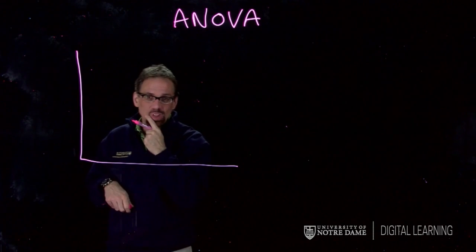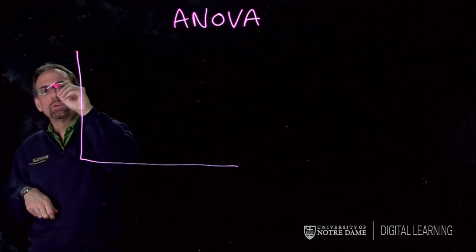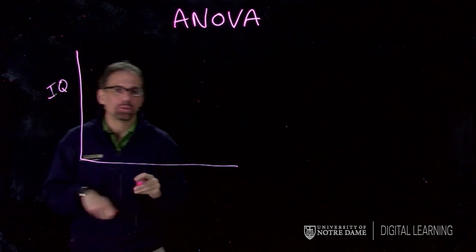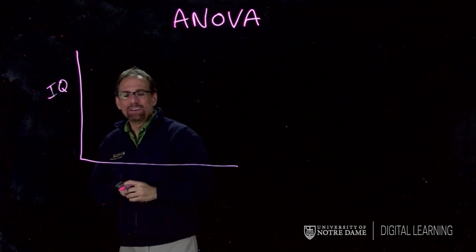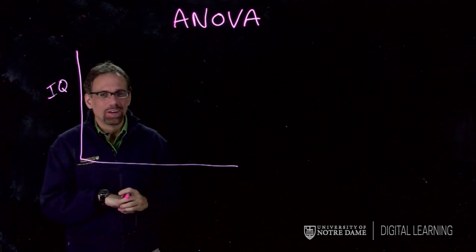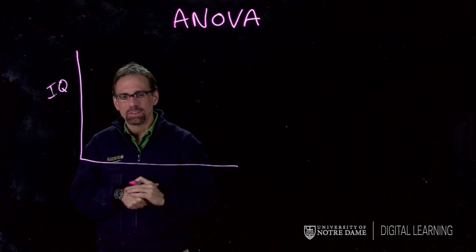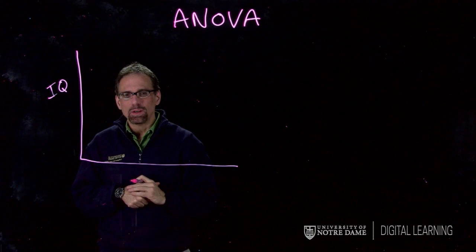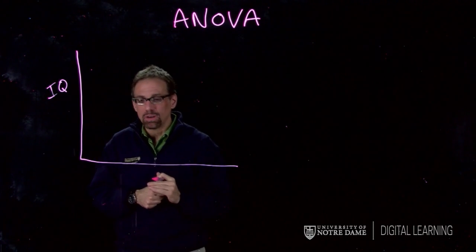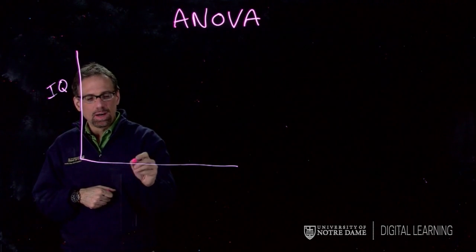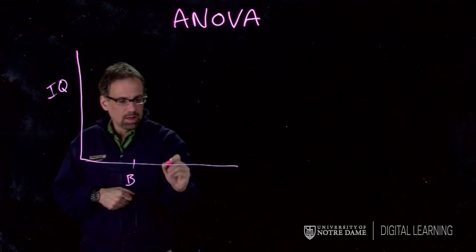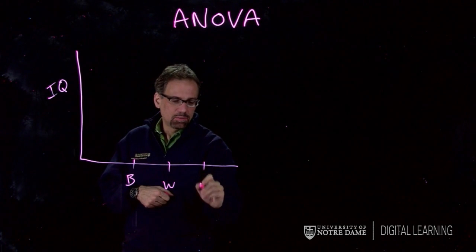Let's suppose we're back to IQ again - we're so obsessed with IQ in this course. I'm going back to our bell curve example from a previous section. I'm going to have three race groups: Black, White, and Hispanic.